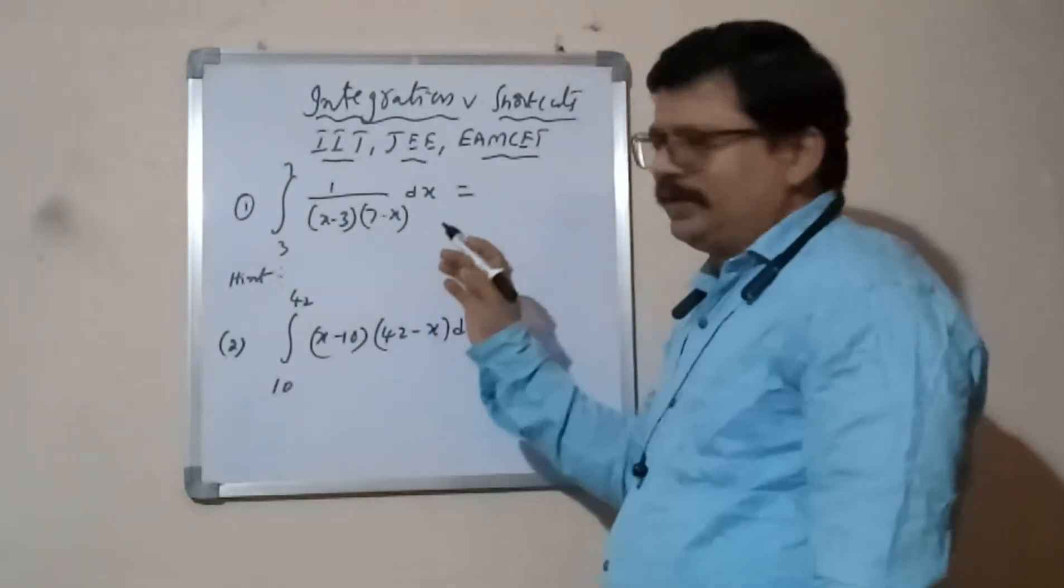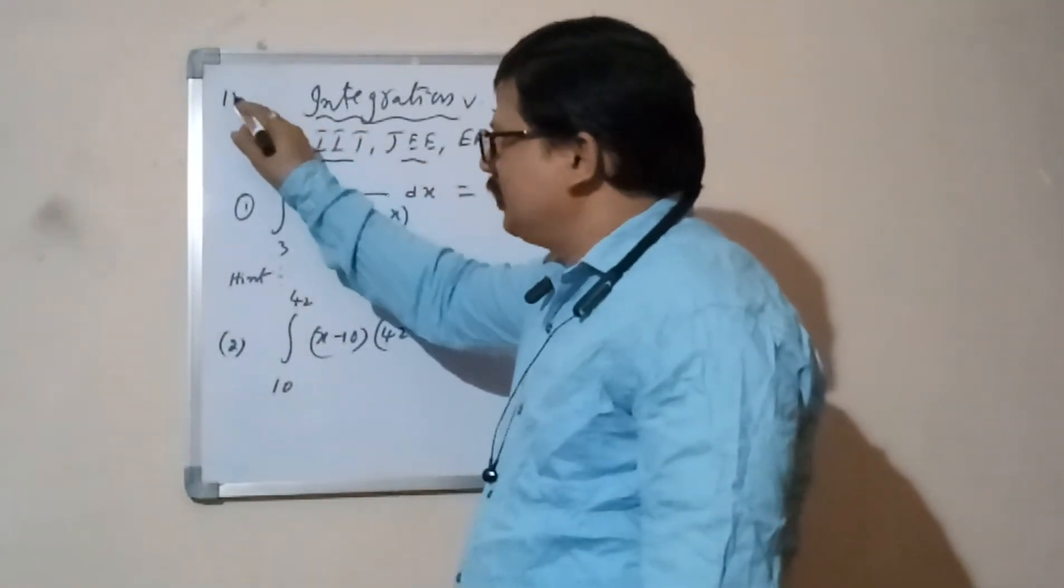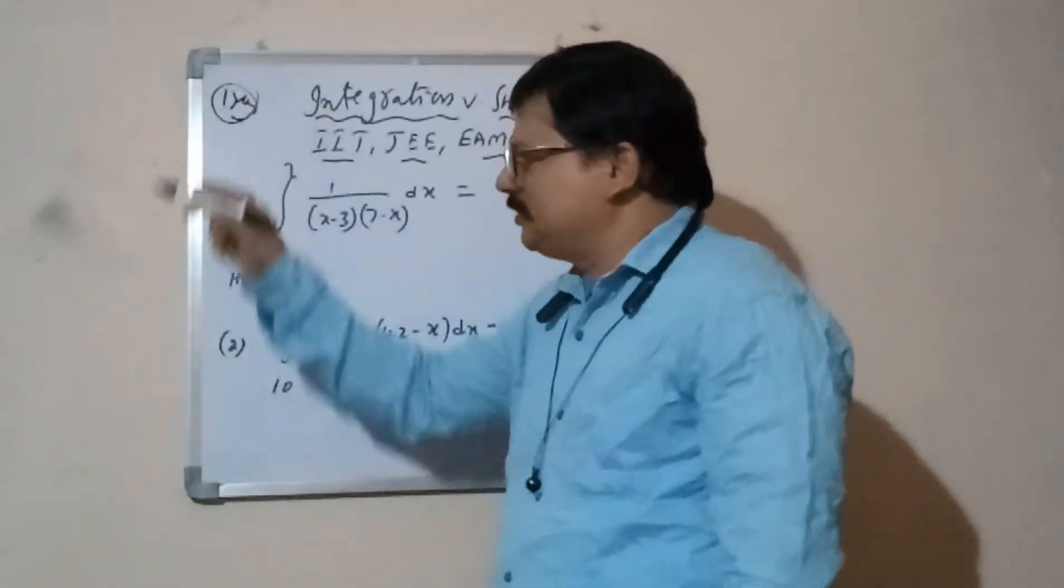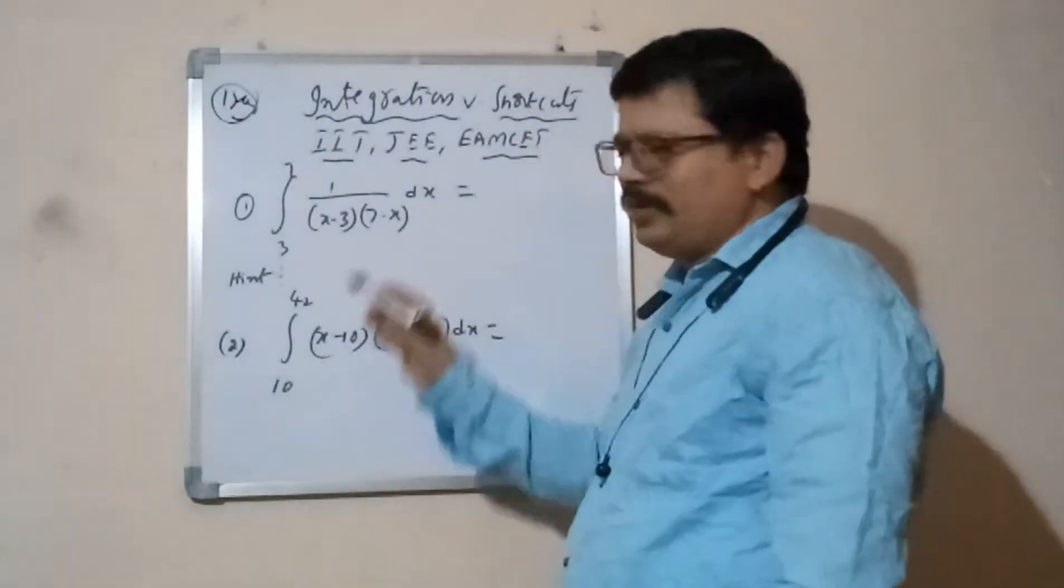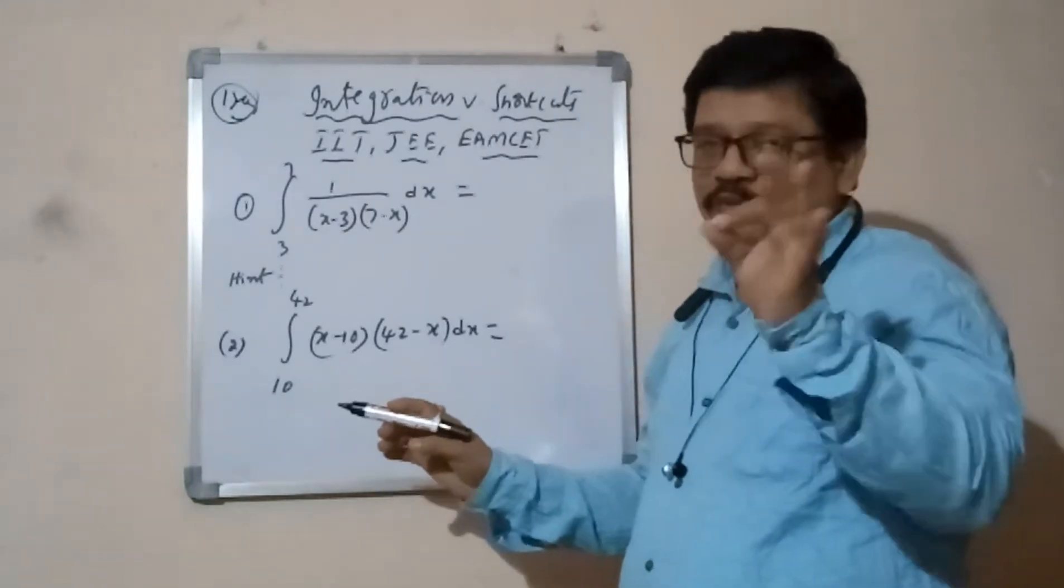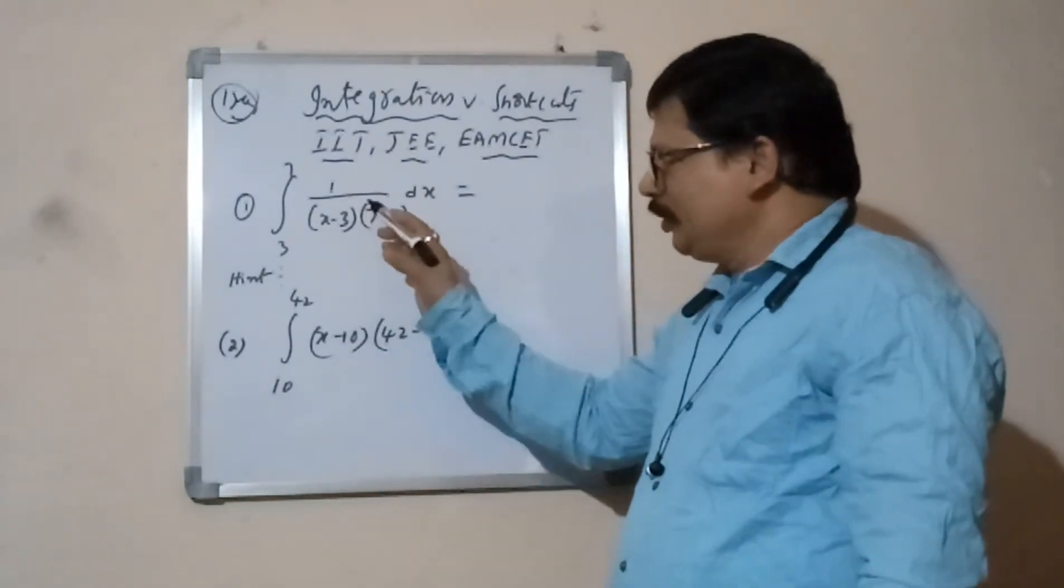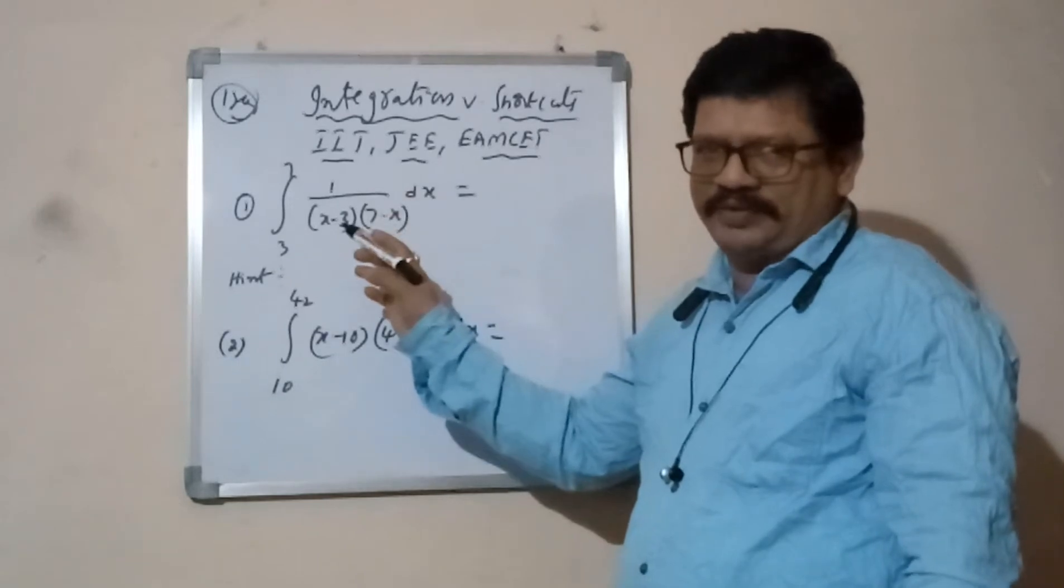Shortcuts, listen carefully. Within one second I will tell answer. This actual question, normal way means minimum time taking 3 to 5 minutes in a different integral chart for this intermediate second year.